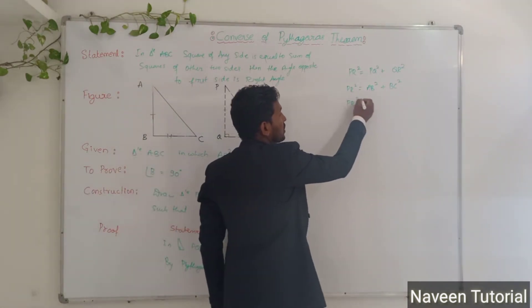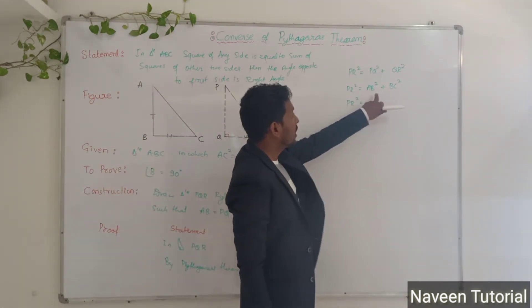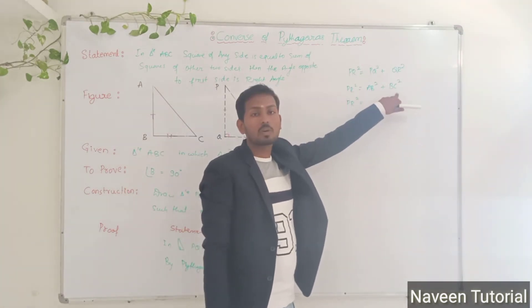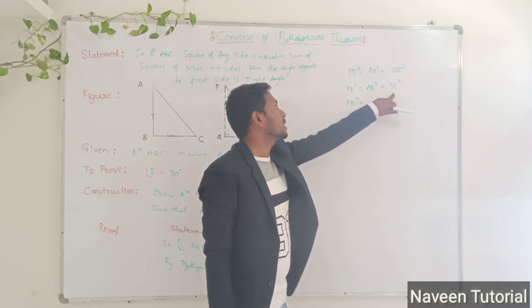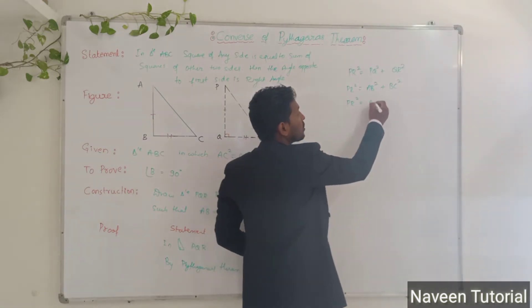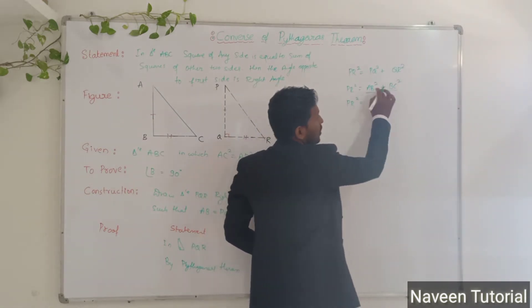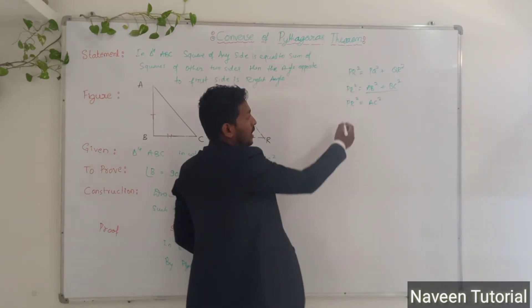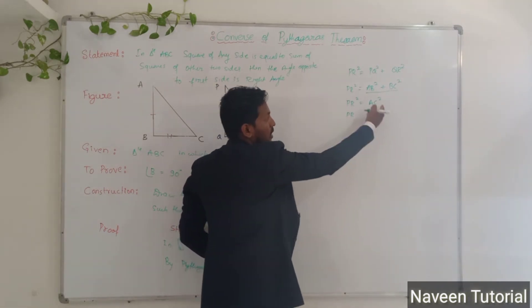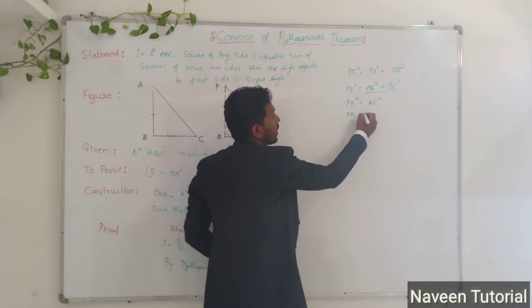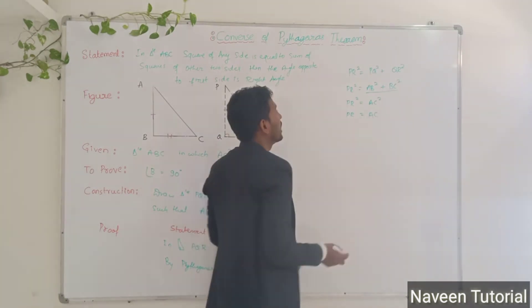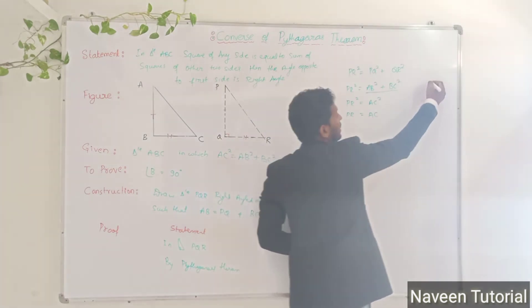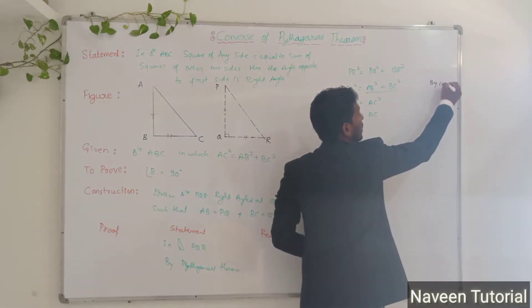Now, AB square plus BC square is nothing but AC square, as given. Therefore, PR square is equal to AC square, which means PR is equal to AC. In the reason column, you write 'by construction' — we substituted the values PQ equals AB and QR equals BC.